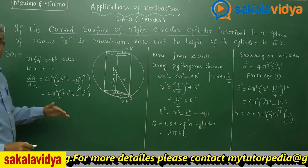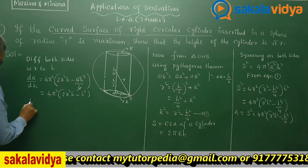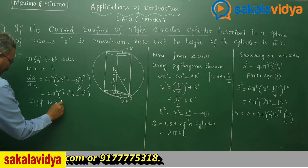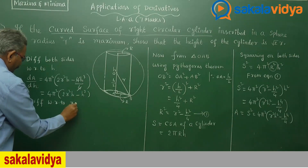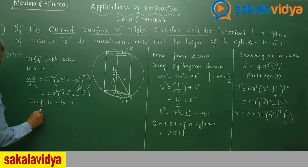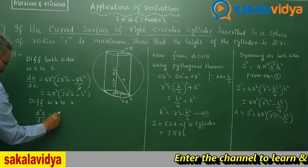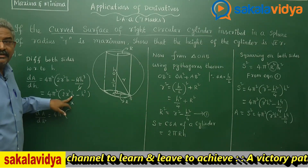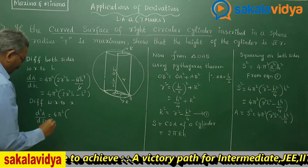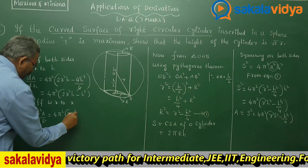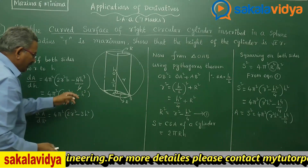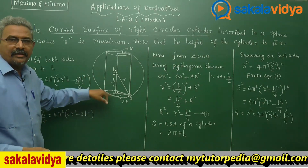Now let us find the second derivative as well. Differentiating dA/dh again with respect to h: d²A/dh² = 4π²(2r² − 3h²), because the derivative of 2r²h is 2r² and the derivative of h³ is 3h².